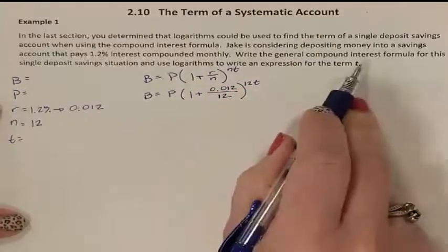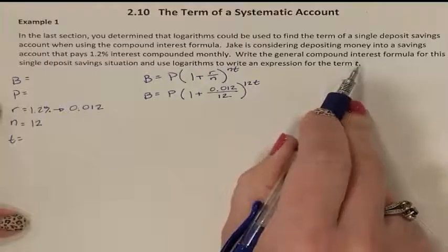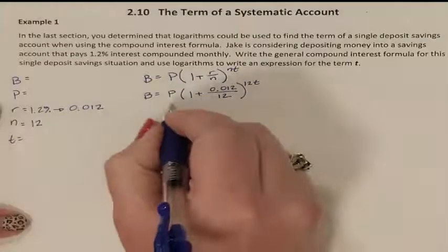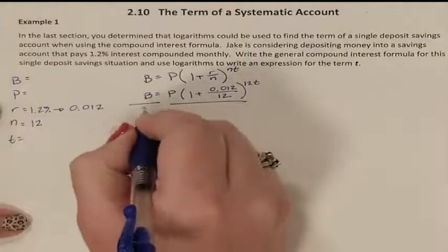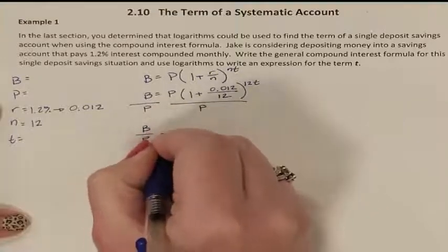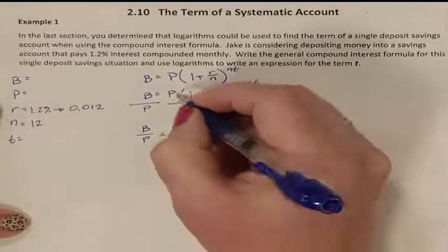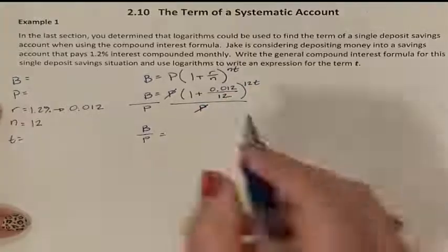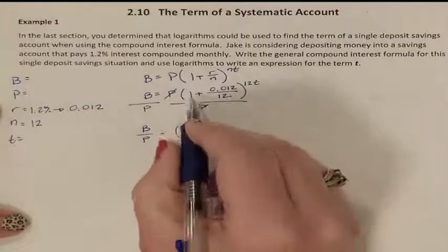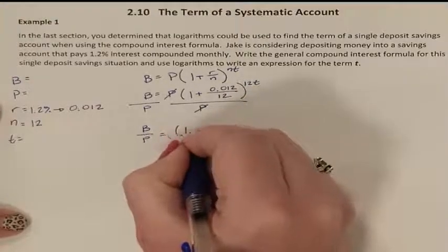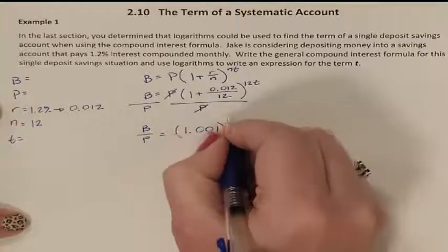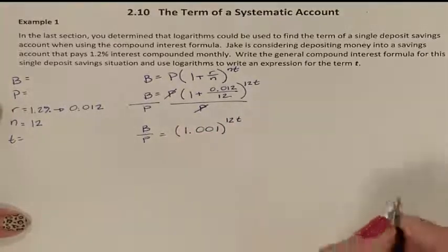We want to solve for t. The first thing we do is get rid of P by dividing both sides by P. So I have the fraction B over P equaling — P divided by P is 1. Simplify the parenthesis: 1.001, and it's all to the 12t power.